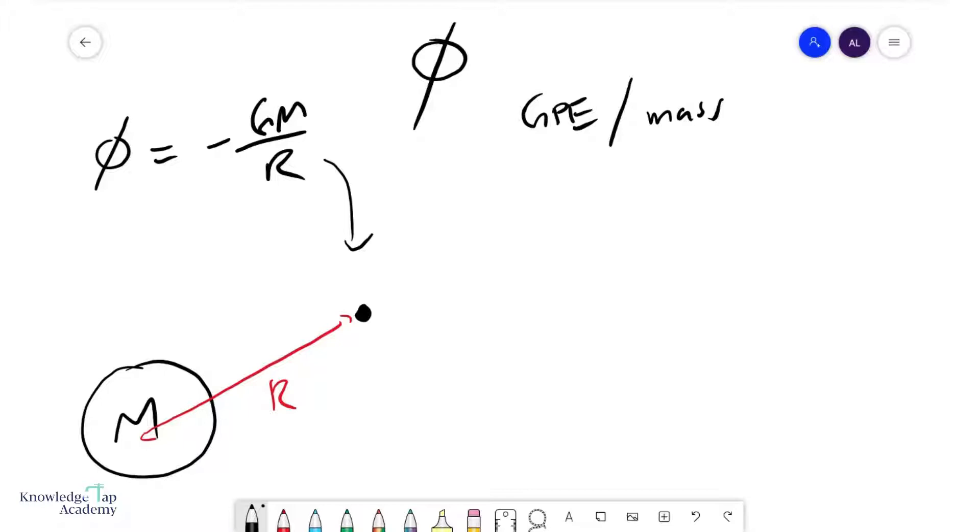Now, what we want to do in this short video is explain the physical meaning of minus GM over r. Okay, so for now, let us simplify this whole thing. Let's use a number. We like to work with numbers. So let's say phi for some reason is minus 100 joules per kilogram.